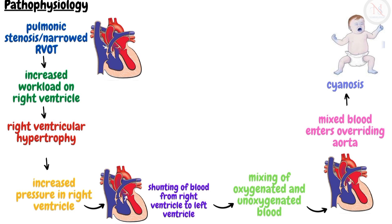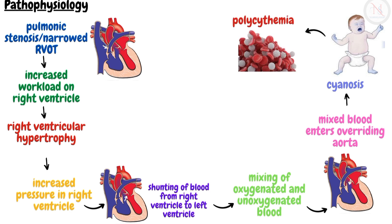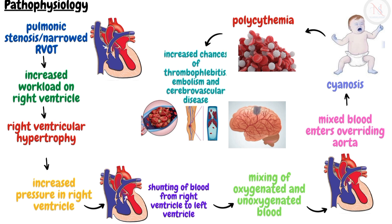To compensate for unoxygenated blood and to deliver more oxygen to the tissues, the body increases RBC count — a condition known as polycythemia — which makes blood more viscous, increasing the chances of thrombophlebitis, embolism, and cerebrovascular disease.